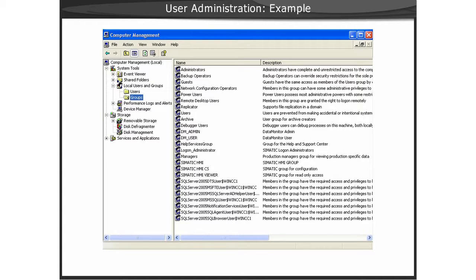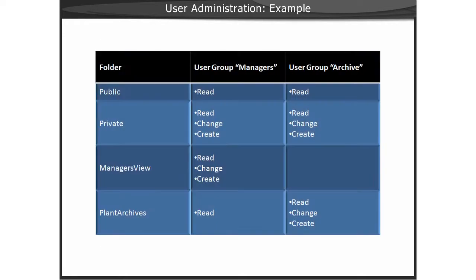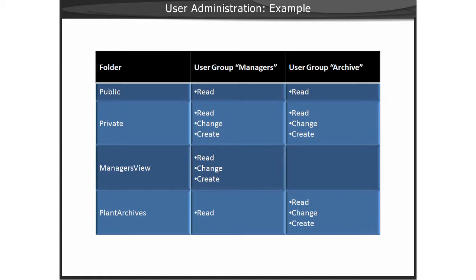We can now apply a permission to our new folders of Managers View and Plant Archives. For the Managers, we would want to grant them full control for their Managers View folder, which might include pages that were designed to give them a snapshot view of the production process, including production counts. However, we would not want the users of the Archive group to have access to this Managers View folder.